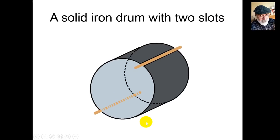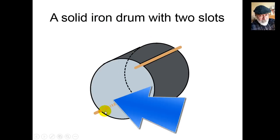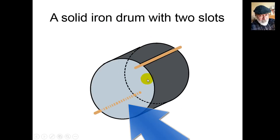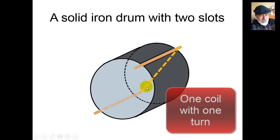Now we move to this solid iron drum in which we have cut two lengthwise slots, one on the top and one on the far side of the bottom. In those slots we have installed insulated wires, and now we join them in the back and we have one coil of one turn.